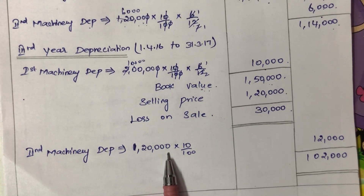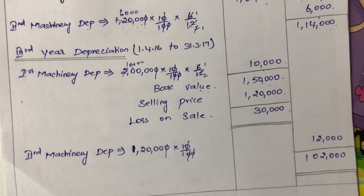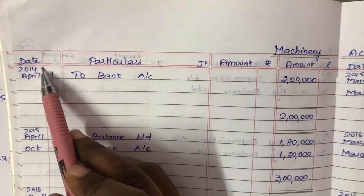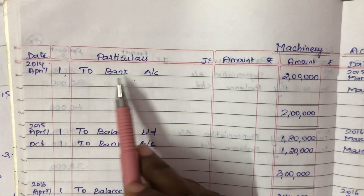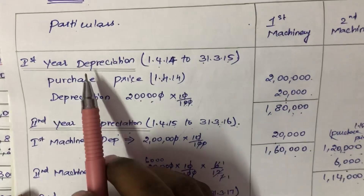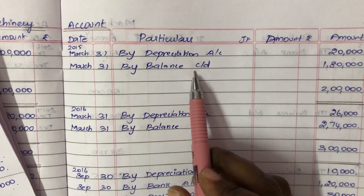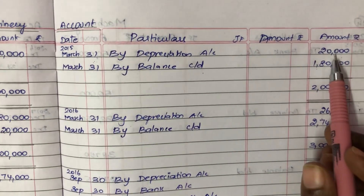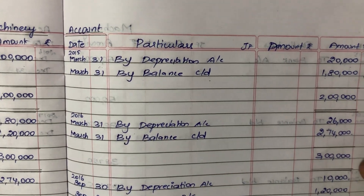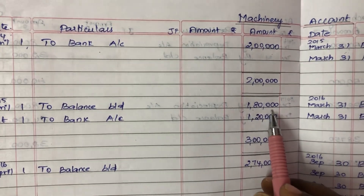Now we prepare the machinery account. Entry: April 1, to bank account Rs. 2,00,000. Depreciation on March 31 by depreciation account Rs. 20,000 — first year depreciation. Balance carry down: Rs. 2,00,000 minus Rs. 20,000 equals Rs. 1,80,000. Total both sides: Rs. 2,00,000. Balance brought down 2015 April 1: Rs. 1,80,000.